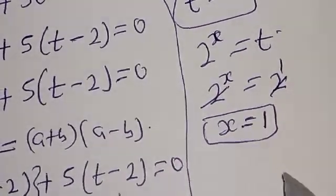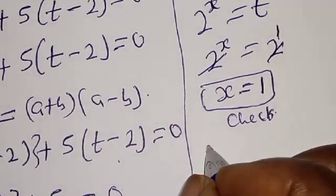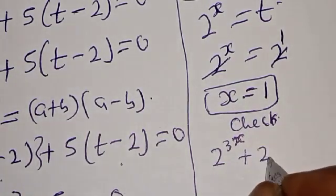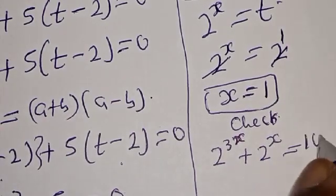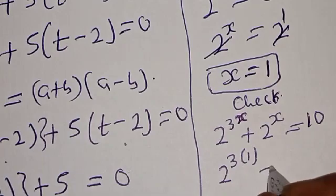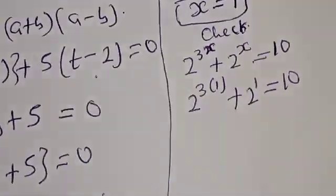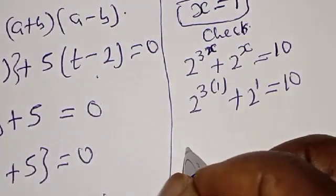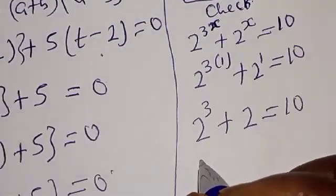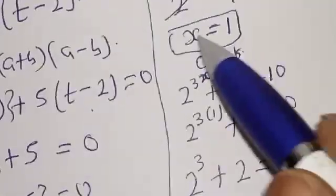Let's check to confirm our answer. We have the given equation: 2 raised to power 3s plus 2 raised to power s equals 10. At s equals 1, we have 2 raised to power 3 times 1 plus 2 raised to power 1, which must equal 10. That gives 2 raised to power 3 plus 2 raised to power 1, which is 8 plus 2, equal to 10. We satisfy the equation at s equals 1.